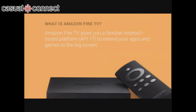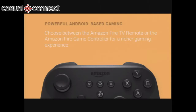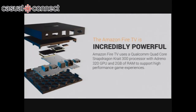Let's talk about Fire TV. API level 17 is what we're built on top of — basically Android 4.2.2. We call it Fire OS. You can think of it as Android underneath the covers with a custom skin. We also have a controller, so you can use the standard remote or our controller for great game experiences. It's pretty powerful hardware — a Qualcomm quad-core Snapdragon with a Krait 300 processor and Adreno 320 GPU. It's got two gigs of RAM, so you're going to be able to push some pretty big textures inside your game.